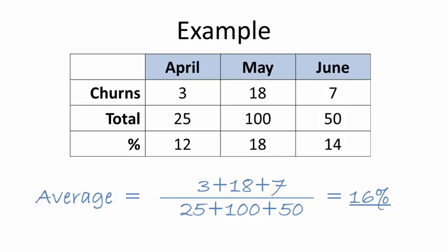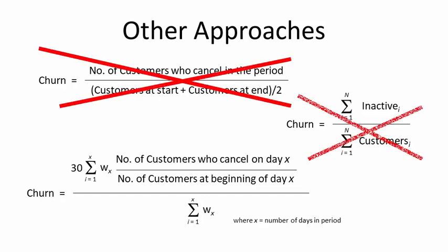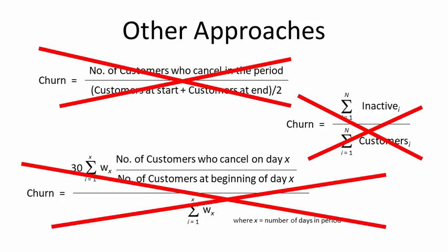This is just one example of a bad churn calculation. Some people include the number of new customers for the period, average the number of customers in a period, or even use weighted outcomes. These methods are mathematically wrong or give very misleading results.